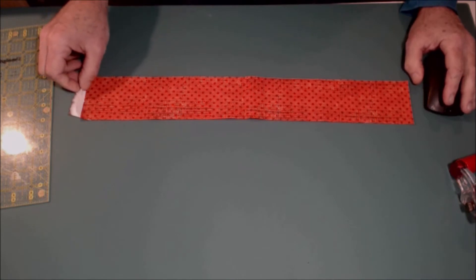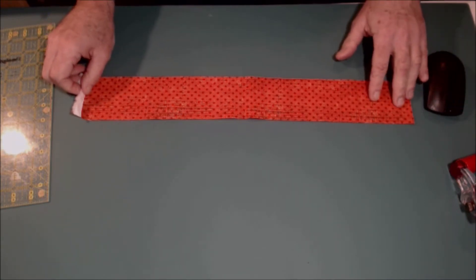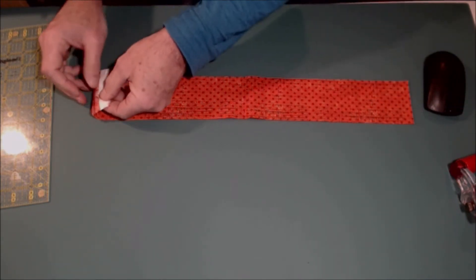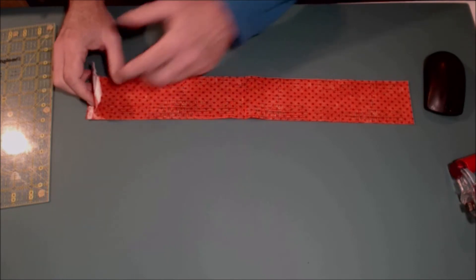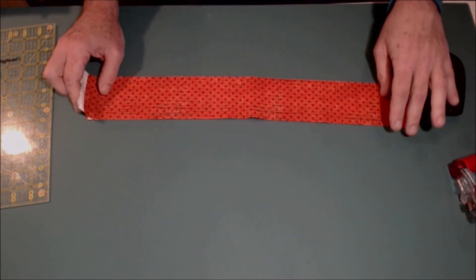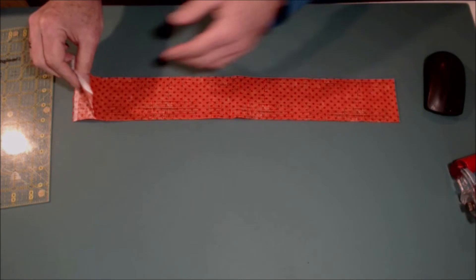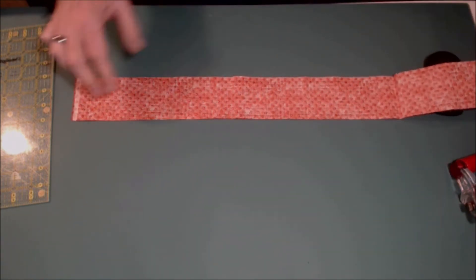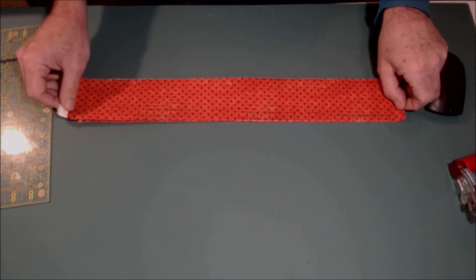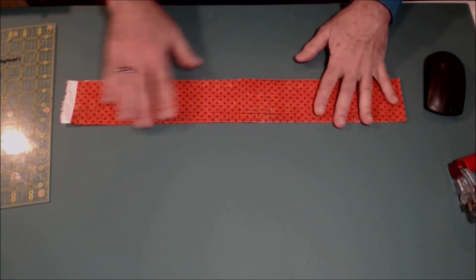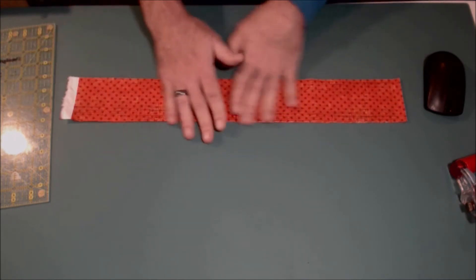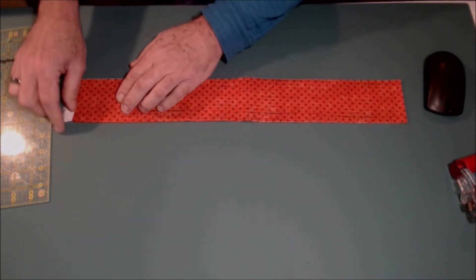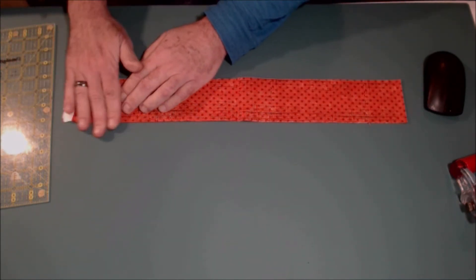The way that this works is, according to the directions, you want right sides together, but I suggest that you leave your strip folded as it came off the bolt. So here's the center fold as the fabric came off the bolt, and you just leave it like that. Now you automatically have wrong sides together.